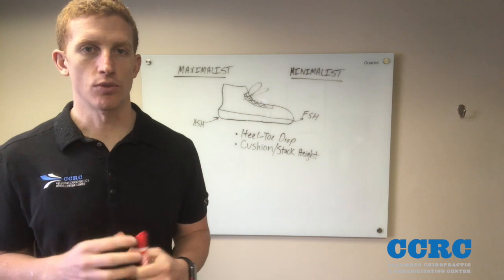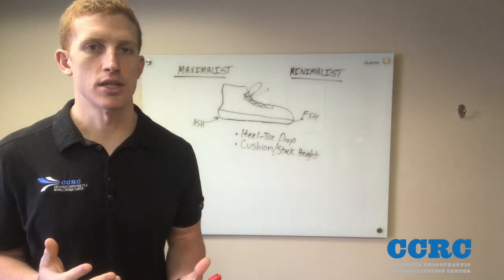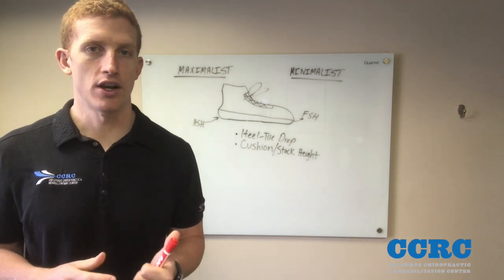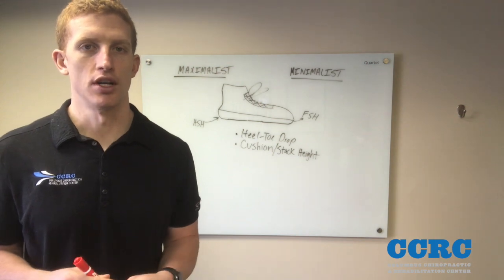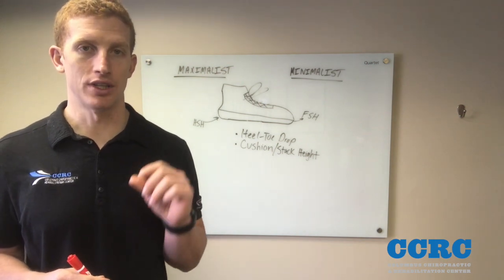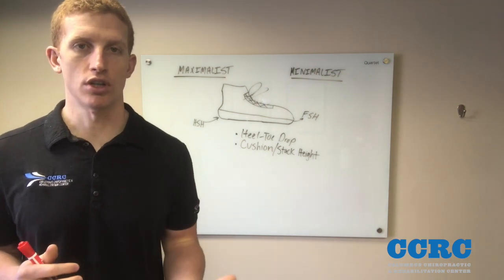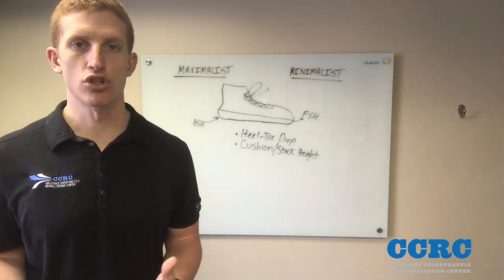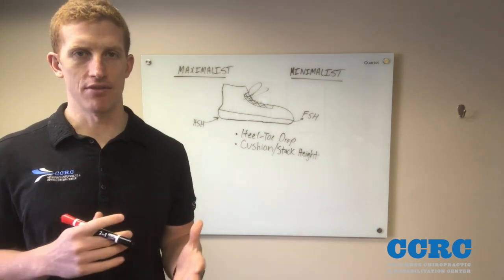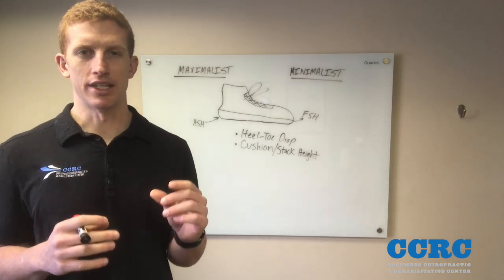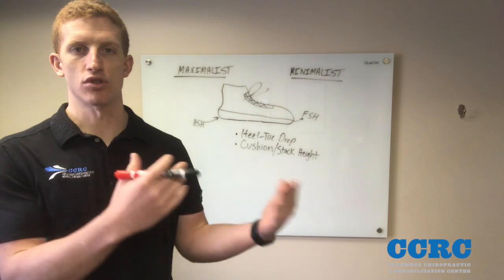Minimalist and maximalist shoes — while they sound like two extremes — are actually on a spectrum and very similar in a lot of aspects. The one way they are similar is a number called the heel-to-toe drop, which is the difference in height between the heel and the front of the foot. If you search heel-to-toe drop, it will give you a number in millimeters, and both minimalist and maximalist shoes need that number to be around eight millimeters or less to be considered either style.